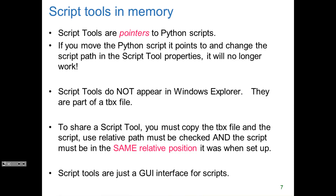If you create a script tool that points to a script and then remove, move, or rename the script, the script tool will no longer work because it's pointing to that Python script. This is when it becomes important to understand relative paths. If you have your script in the same directory as your script tool, then when you share it with someone else or move it to another machine, make sure you get the entire directory that has both the script tool and the script, and use the 'use relative paths' option.